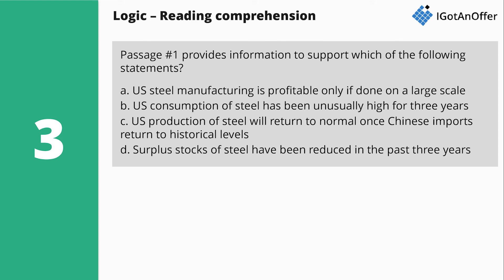Here's an example of this type of question: Passage number one provides information to support which of the following statements? A. US steel manufacturing is profitable only if done on a large scale. B. US consumption of steel has been unusually high for three years. C. US production of steel will return to normal once Chinese imports return to historical levels. Or D. Surplus stocks of steel have been reduced in the past three years.